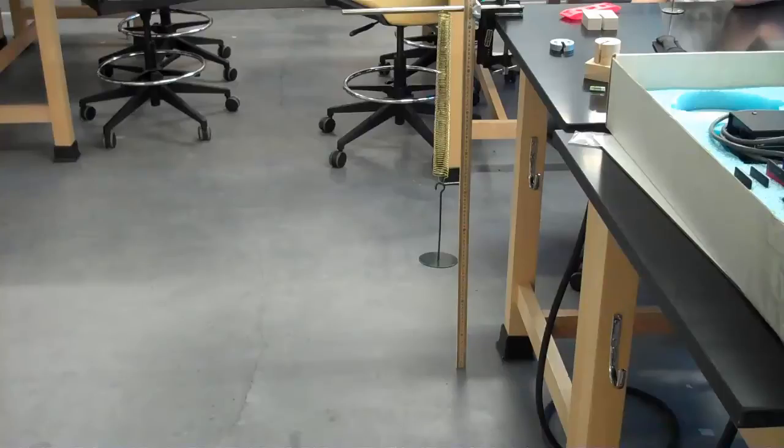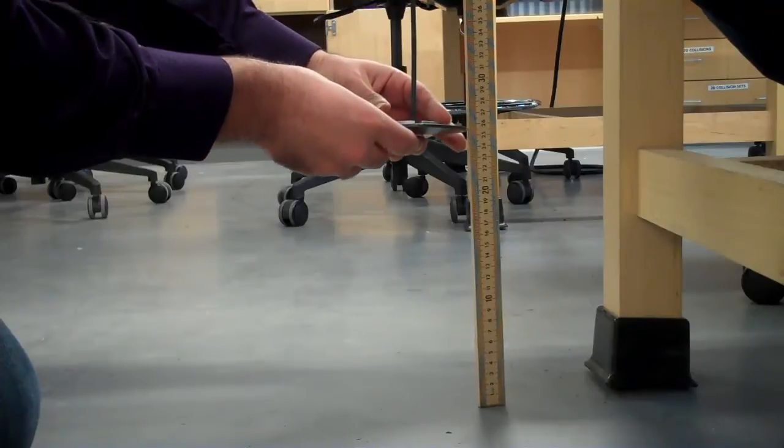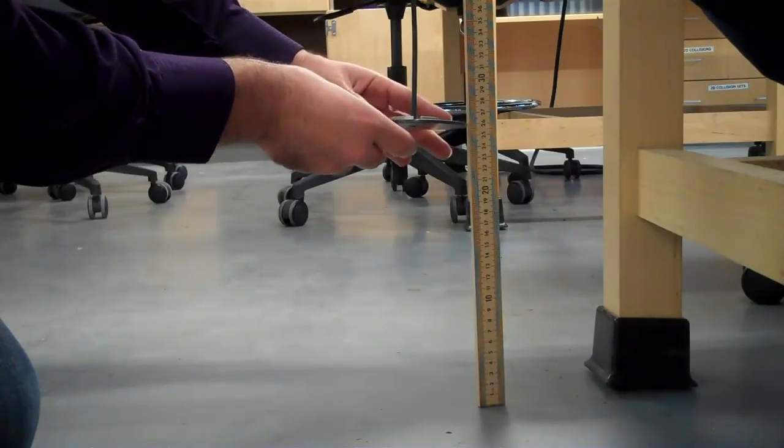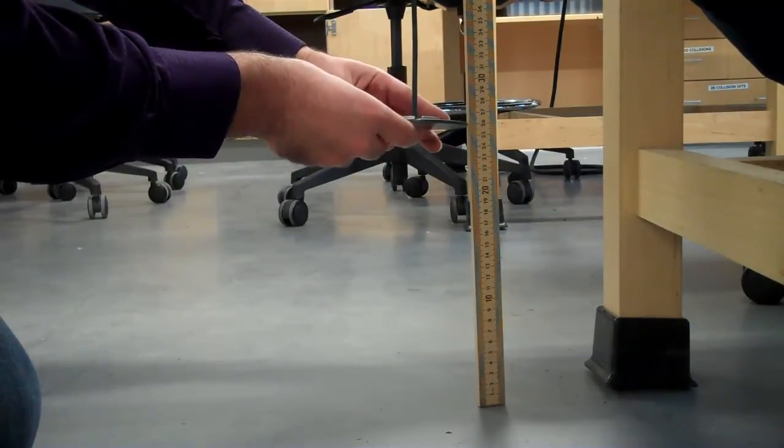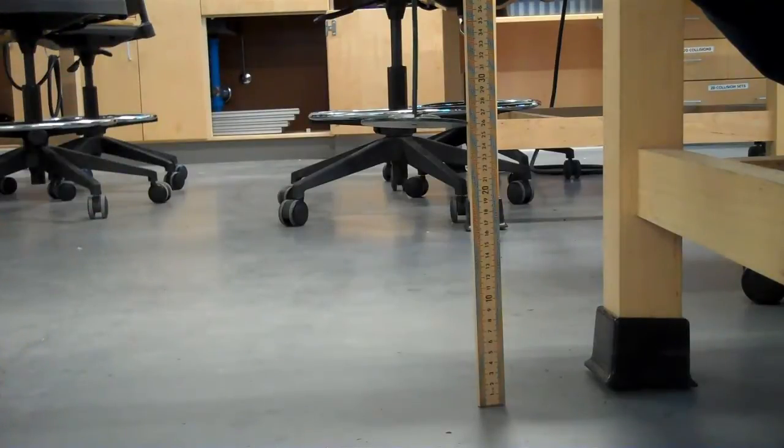Here we have a hanger attached to the end of a long spring. If we add a 50 gram mass to the hanger, it pulls down the spring to about 25.8 centimeters.